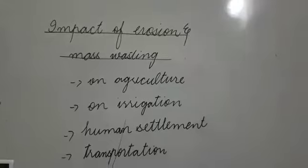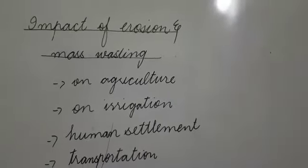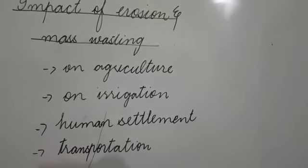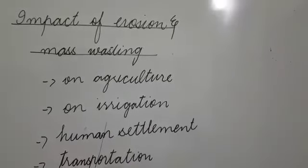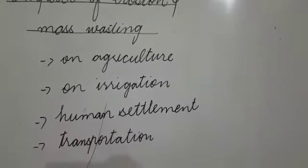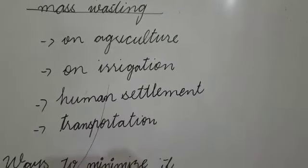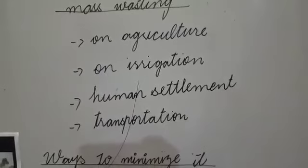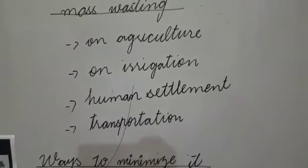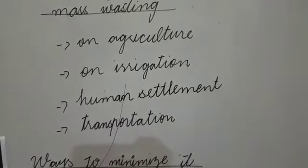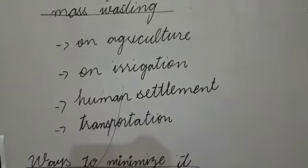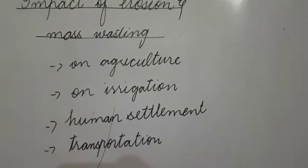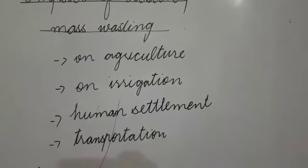Now, what are the impacts of erosion and mass wasting? The first impact is on agriculture, on irrigation, human settlement and transportation. Agriculture: when floods wear away on the top of the fertile soil of agricultural land, this result in less drought and this destroy the land fertilization.